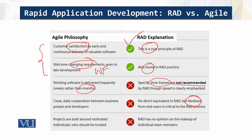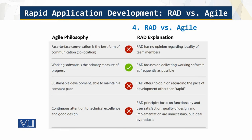In Agile, projects are built around motivated individuals, but in RAD we say it's a team — what type of team members and their approach is not covered in the RAD explanation. Agile specifies that face-to-face conversation is the best form of communication, but RAD has no opinion regarding the locality of team members — whether they meet over web chat or online. Working software as the primary measure of progress is a similarity; both RAD and Agile deliver working software.